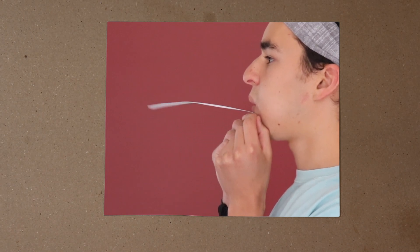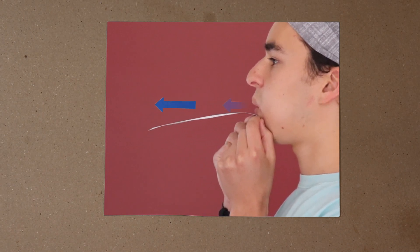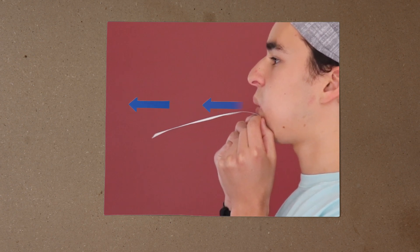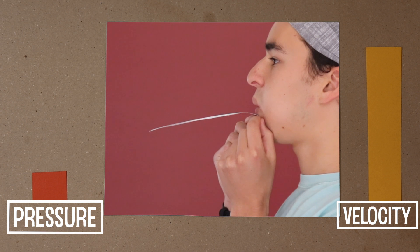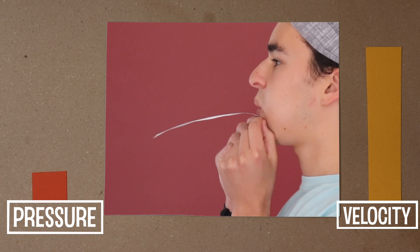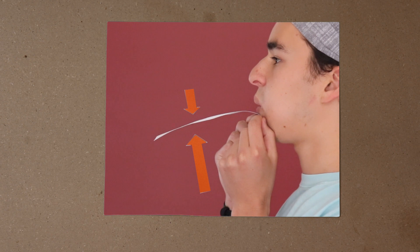Well, the air coming out of your mouth is moving faster than the air underneath the piece of paper. Now we just learned that faster flow means lower pressure, so the pressure on top of the paper is lower than the pressure on the bottom of the paper.